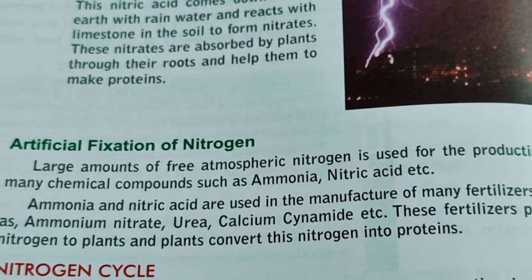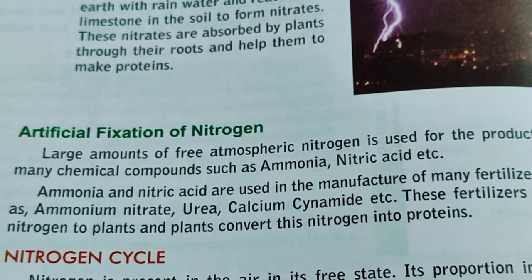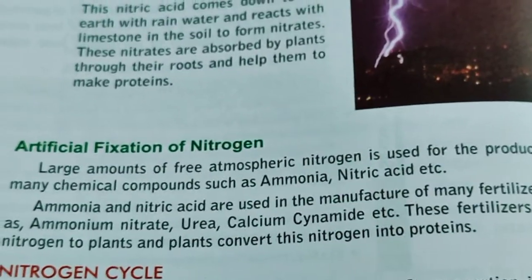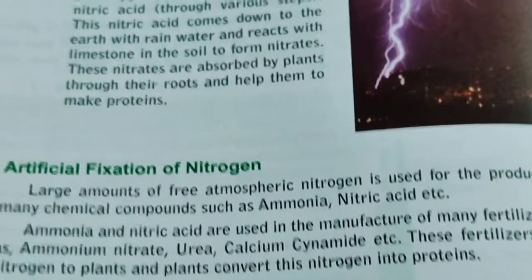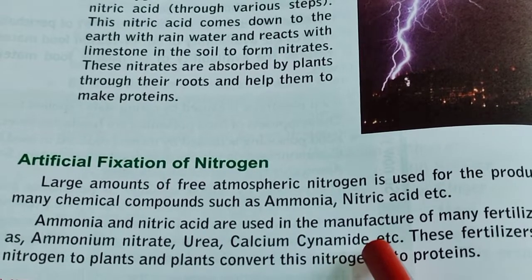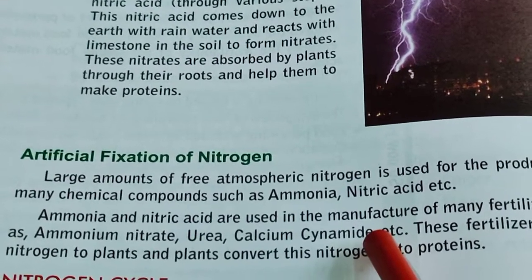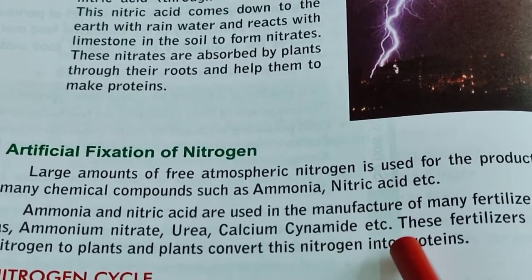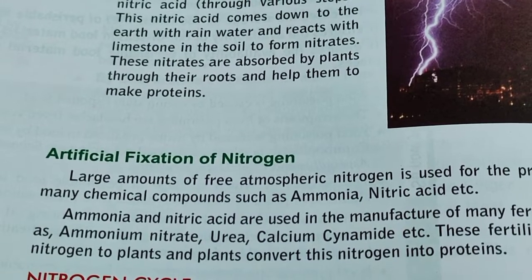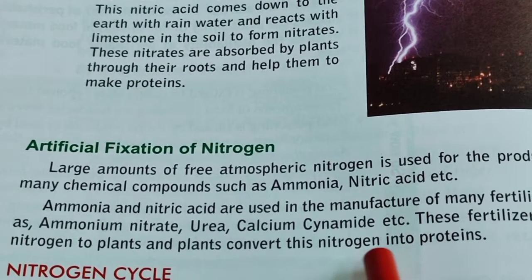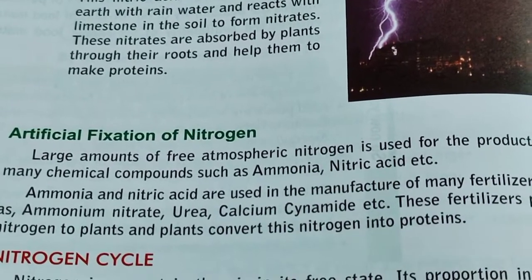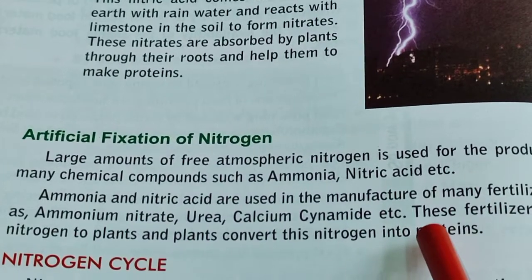Nitrogen can also be supplied to the soil by artificial processes. Many nitrogenous fertilizers like ammonium nitrate, urea, and calcium cyanamide are good sources of nitrogen for the soil. These fertilizers provide nitrogen to plants, and plants convert this into protein. So artificially, by supplying fertilizers, nitrogen can also be fixed into the soil.